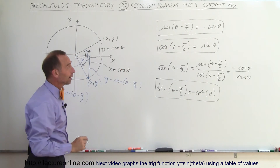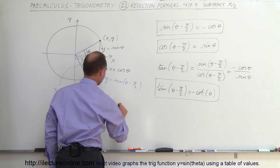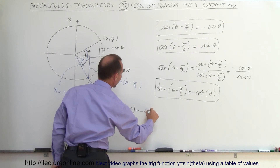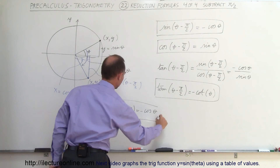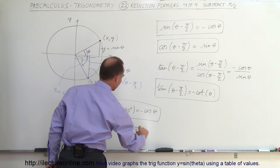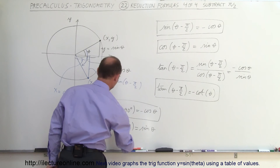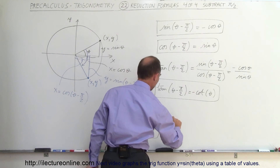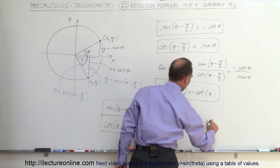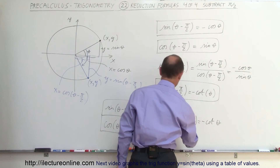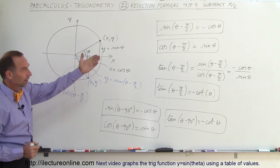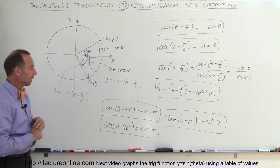We can also write these in degrees: the sine of theta minus 90° equals negative cosine of theta; the cosine of theta minus 90° equals positive sine of theta; and the tangent of theta minus 90° equals negative cotangent of theta. There are the three reduction formulas in both the π format and the 90-degree format.